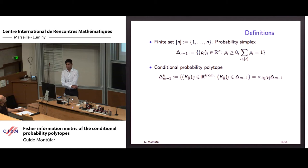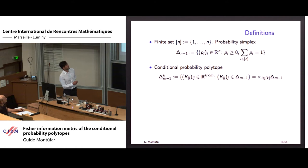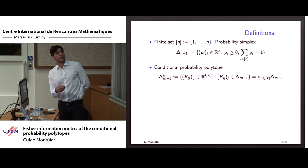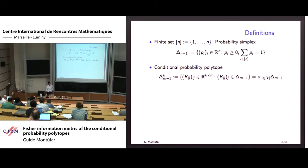I'm going to be looking at finite sets of events — one through n — and the probability simplex, which is n minus one-dimensional. The conditional probability polytope is a Cartesian product of probability simplices — these are stochastic matrices where each row is a probability distribution, and all the rows are independent of each other.